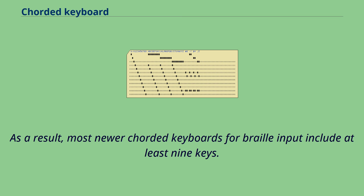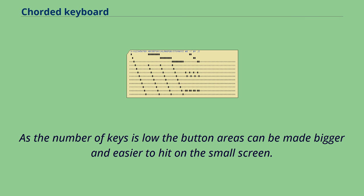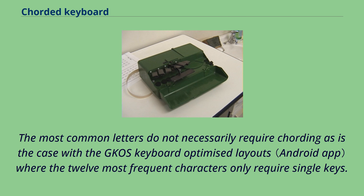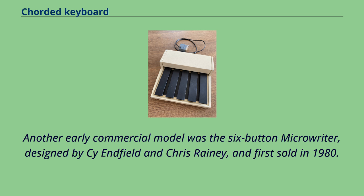Touchscreen chorded keyboards are available to smartphone users as an optional way of entering text. Since the number of keys is low, the button areas can be made bigger and easier to hit on a small screen. The most common letters do not necessarily require cording, as is the case with GOES keyboard optimized layouts where the 12 most frequent characters only require single keys. The Right-Hander, a 12-key chord keyboard from Nuo Company, appeared in 1978 issues of ROM Magazine, an early microcomputer applications magazine. Another early commercial model was the six-button MicroWriter, designed by Cy Enfield and Chris Rainey, and first sold in 1980.